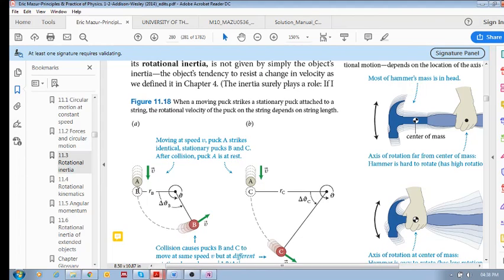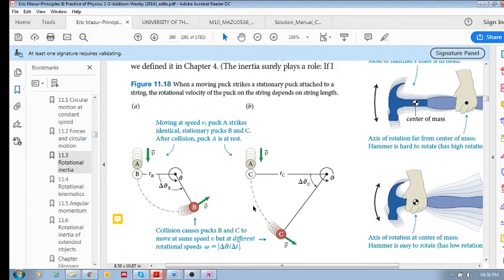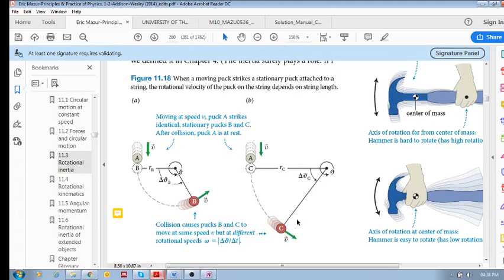Now, if we hit puck B and puck C and they move with the same velocity, the same velocity, they're both moving at the same velocity.